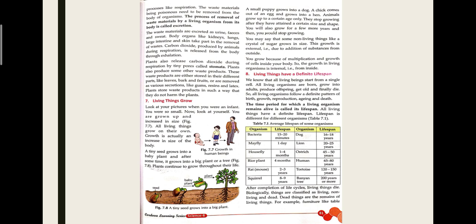In animals, the waste materials are urine, faeces, and sweat, which are removed by the kidneys, lungs, large intestine, and skin. In plants, gums, resins, and latex are the waste materials removed through various secretion methods. This concludes the topic of excretion in living things.